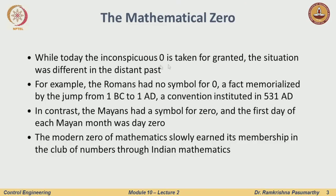What is a mathematical zero? Going back to history a little bit, there was no symbol for zero in Roman numerals — you had X, V, L, and C. There was no concept of zero there. A few other civilizations had some kind of symbol for zero; for example, the first day of each Mayan month was zero, but significant advances happened through Indian mathematics.